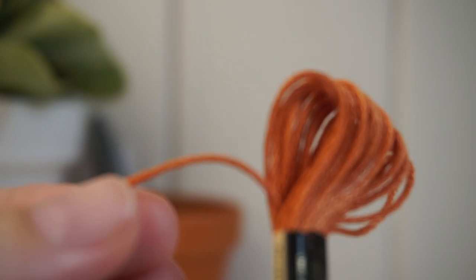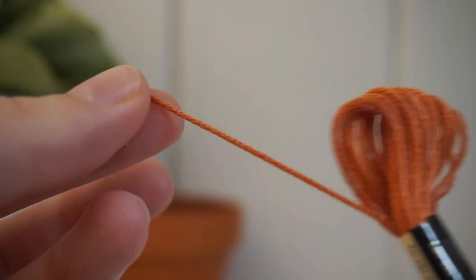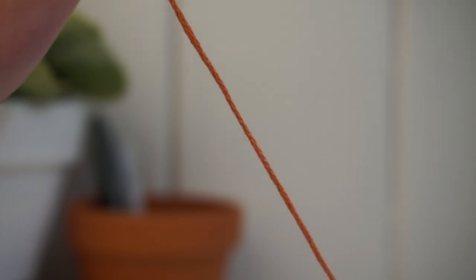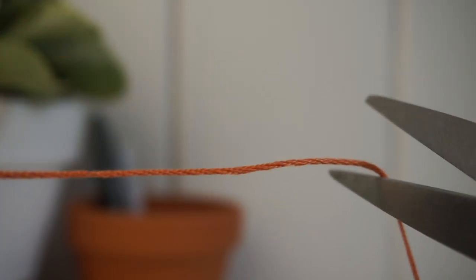First we're going to cut off a stretch of thread, and once that's cut we're going to separate the end of one of the sides to see the different pieces that are there.